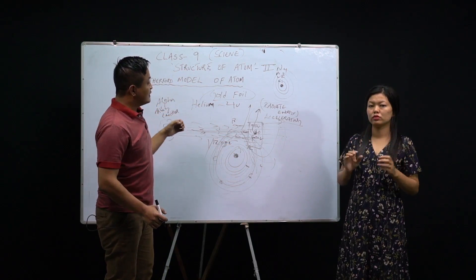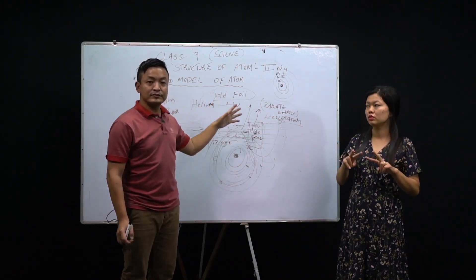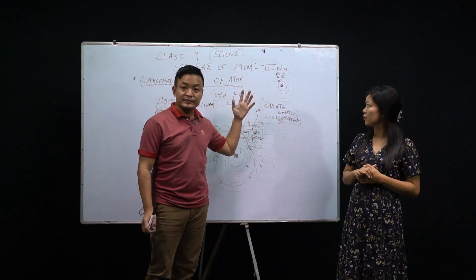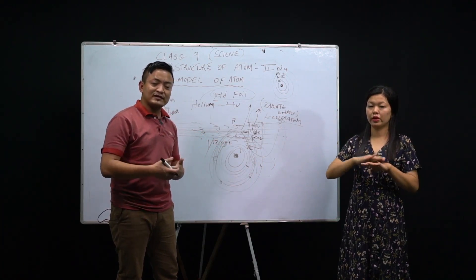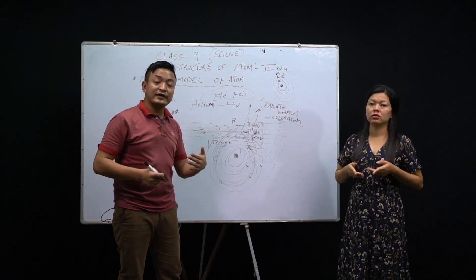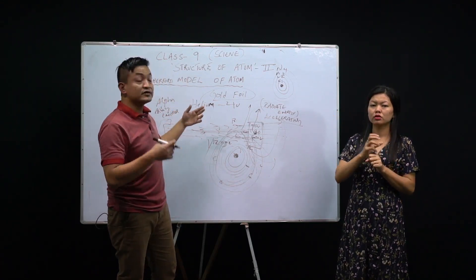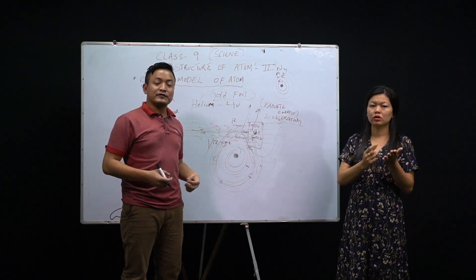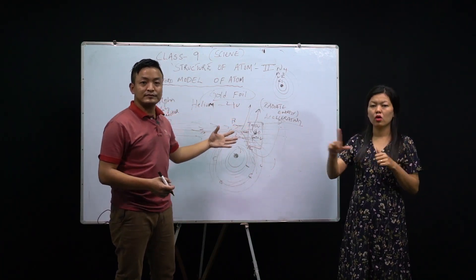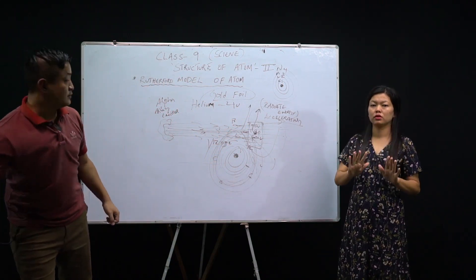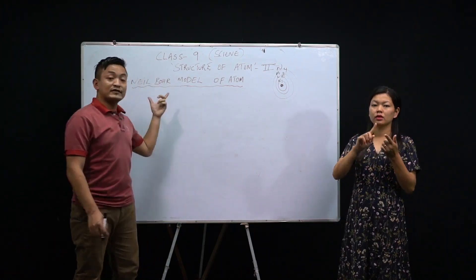Next, we are going to study the Niels Bohr model of an atom. He gave a successful model of an atom. Bohr was very curious about the distribution of electrons. So far, scientists like Goldstein, Thomson, and Rutherford each contributed major parts to the structure of the atom, but there were drawbacks. Now the fourth model we'll study is the Niels Bohr model of an atom.